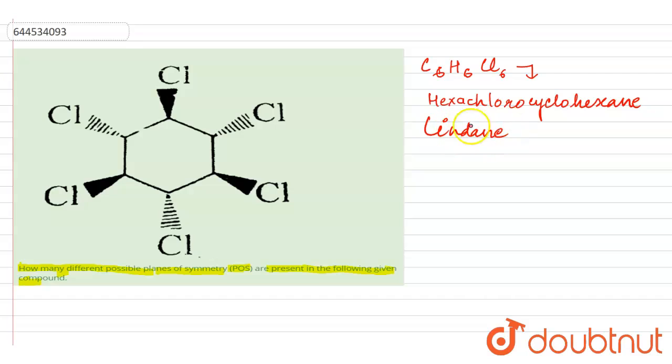The IUPAC name is hexachlorocyclohexane, and the common name is known as Lindane. Now they are asking how many possible planes of symmetry are present.